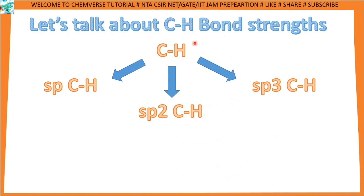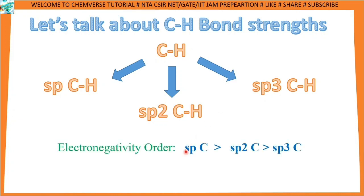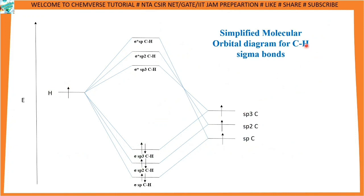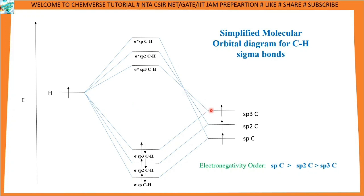Now let's talk about CH bond strength. There are three types of carbon: sp, sp2, and sp3. The electronegativity order is: sp carbon is the most electronegative, then sp2, then sp3. To understand bond strength, let's look at the simplified molecular orbital diagram of the CH sigma bond. The electronegativity order means that sp carbon is most electronegative, then sp2, then sp3.